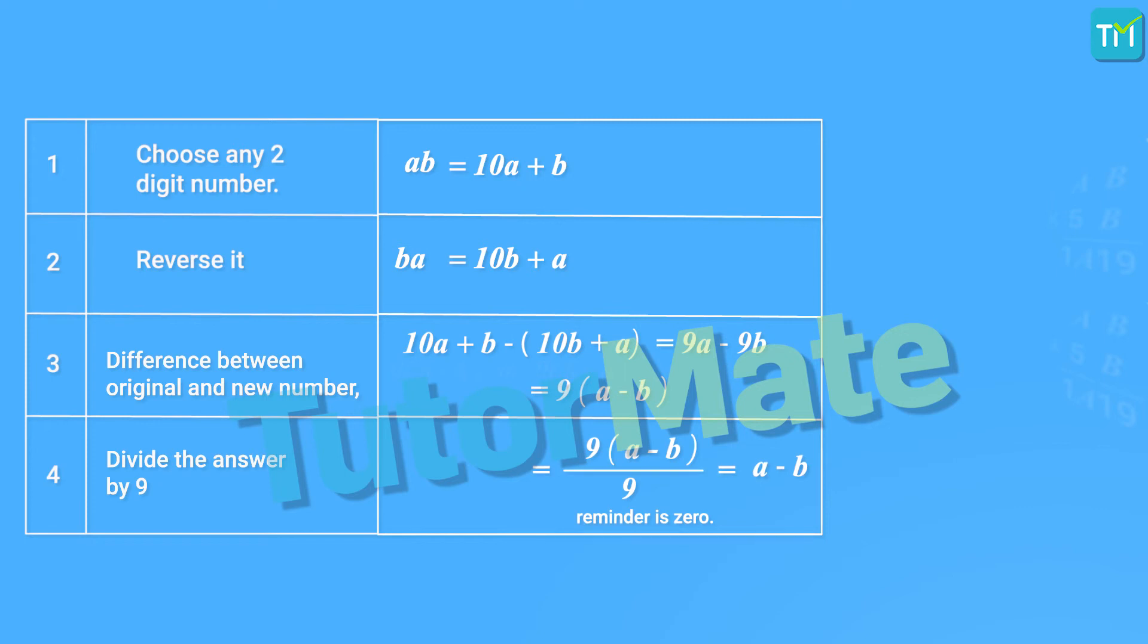Let's see. The resulting difference is either going to be 9 into bracket A minus B or 9 into bracket B minus A. So, when we divide the resulting number by 9, the quotient will either be A minus B or B minus A. Right? This means the quotient will be the difference of the digits based on which one is greater, A or B.